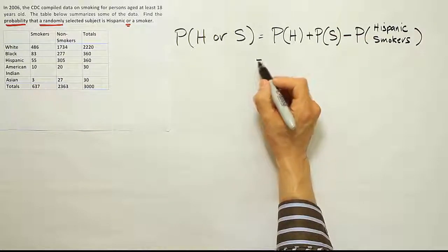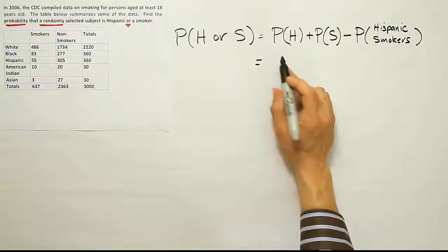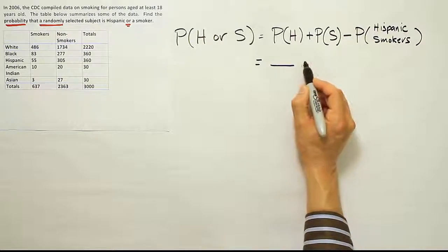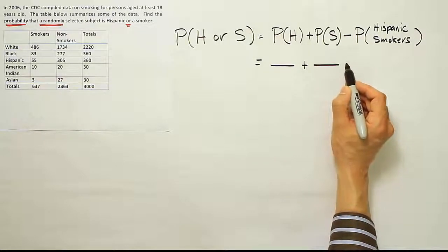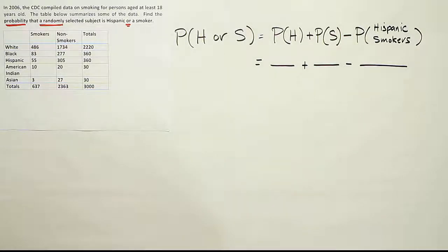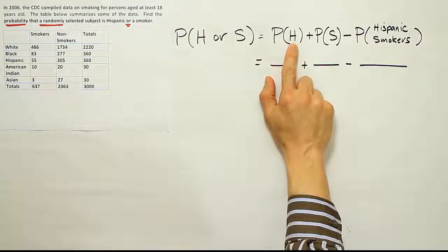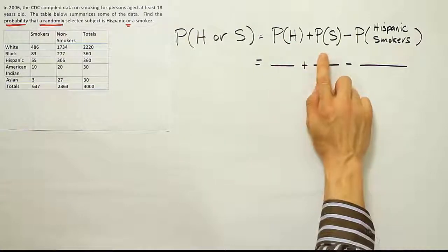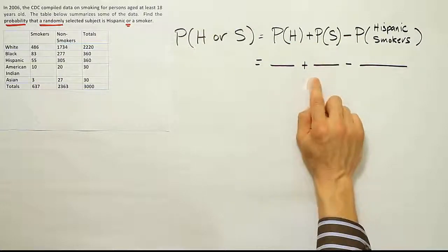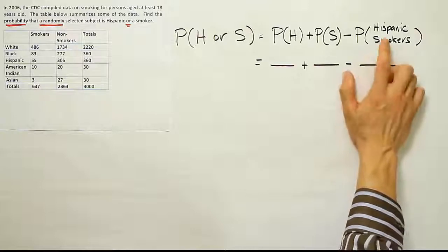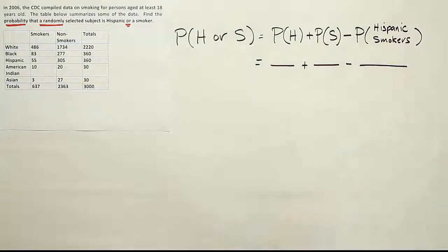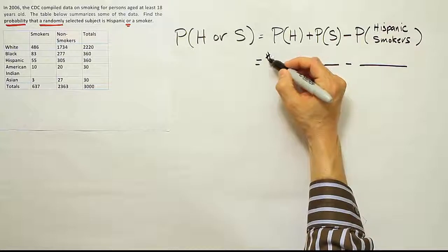Now, from there, we just have to work these out. Keep in mind that each little part of this is just a basic probability. In other words, it's a simple fraction, a fraction that will have on top the number of Hispanics divided by the total. This one will be the number of smokers divided by the total, and this one will be the number of Hispanic smokers divided by the total. So for each one, it's the same pattern as before.